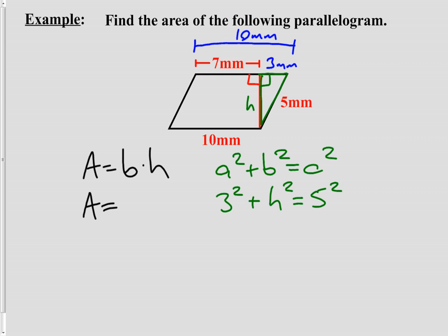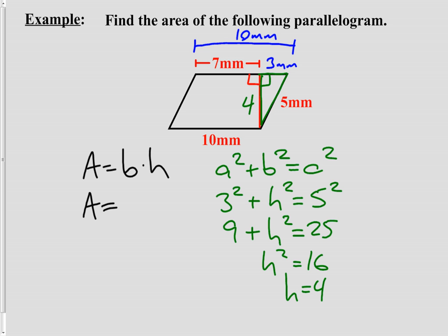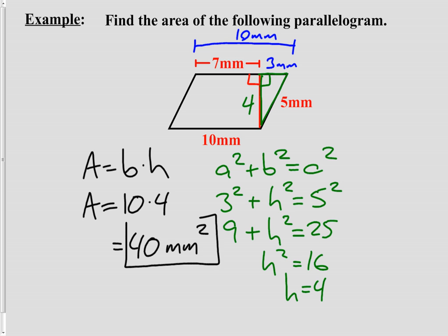It looks like a job for Pythagorean theorem: a² + b² = c². We know a leg of 3, an unknown height, and a hypotenuse of 5. This is a Pythagorean triple — the 3-4-5 right triangle — so the height is 4. That's the only missing piece. With base = 10 and height = 4, the area is 10 × 4 = 40. The units were millimeters, and area is always second-dimensional, so the answer is 40 square millimeters.